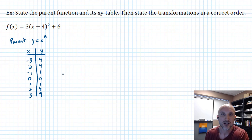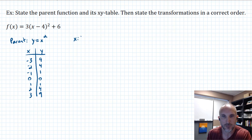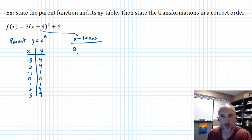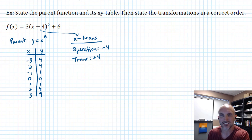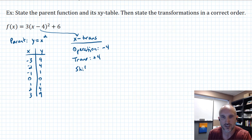Now we need the transformations. If we go inside the parent function to get the X transformations, we only have one operation. The operation we see inside is minus four. So the transformation is the reverse of that, which is plus four. What does that mean on a graph if we add four to X? That's a shift because it's addition, and it's happening to X, so shifting to the right — a shift right of four units.